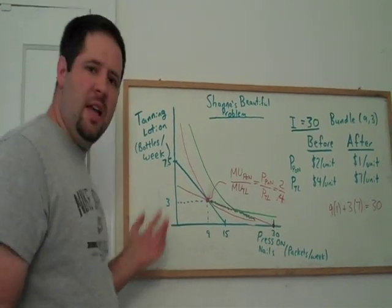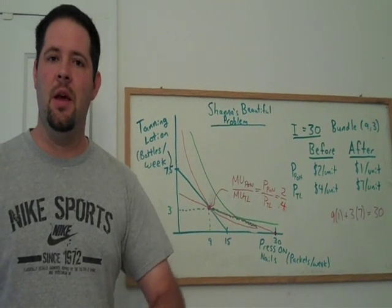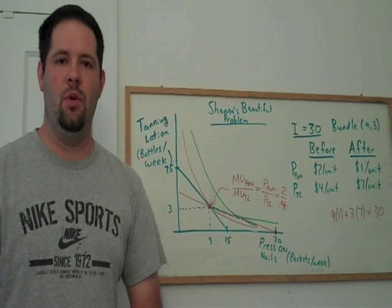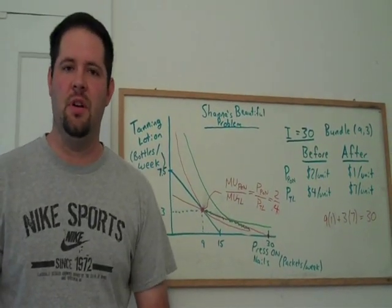And third, it shows kind of how you can use these indifference curves and budget constraints to make predictions and describe types of behavior that you would see in the world. And it really shows a lot of the usefulness of indifference curve analysis.